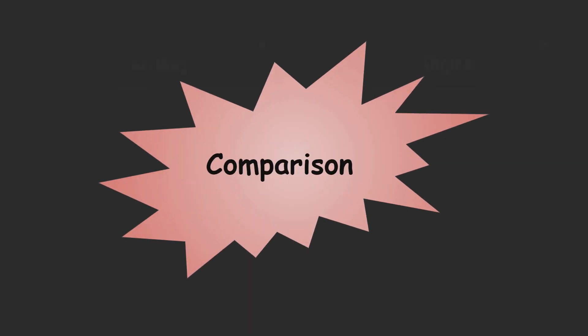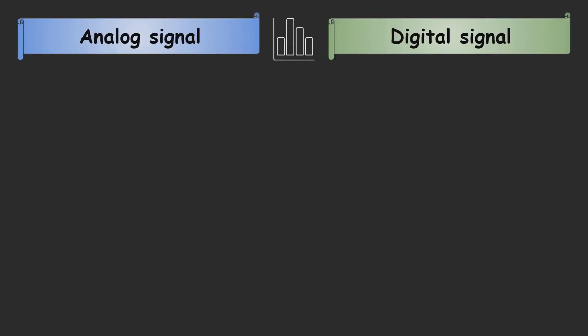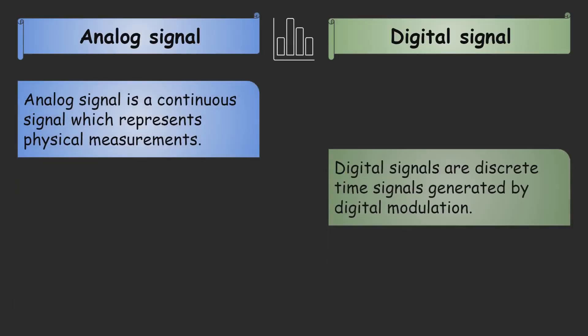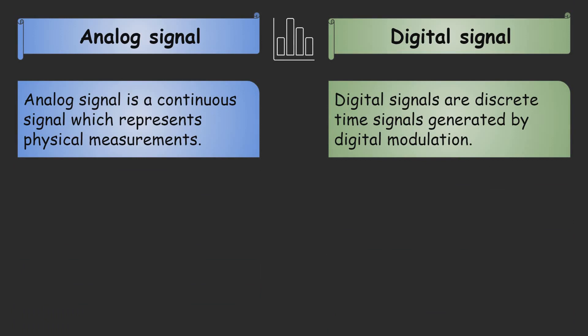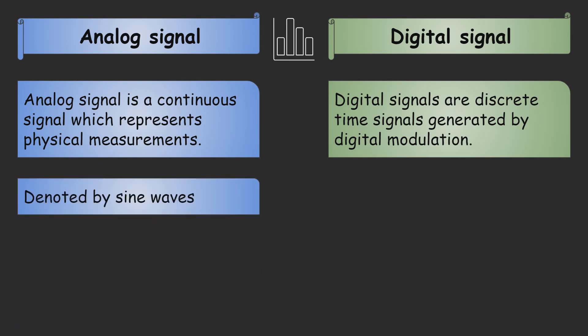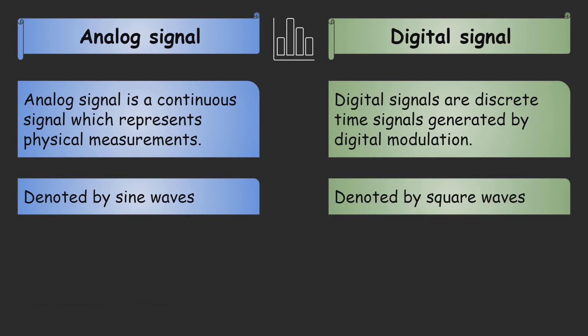We can compare analog signal and digital signal in the following way. In analog signal it is continuous signal which represents physical measurements, while digital signals are discrete time signals generated by digital modulation. Analog signals are denoted by sine wave, while digital signals are denoted by square wave.